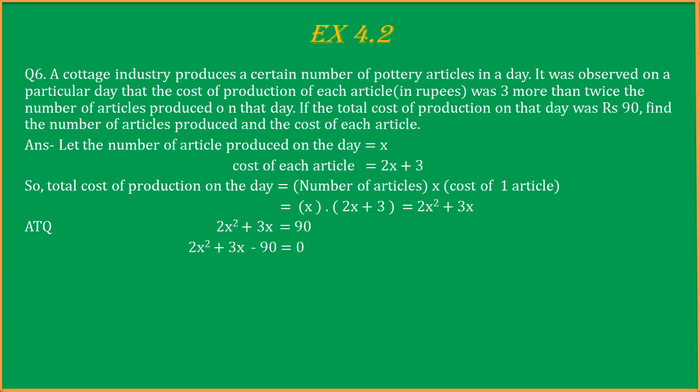Taking 90 to the left side, we will get a quadratic equation. Now we will solve by factorization using splitting the middle term. So we will split 3x into 15x and minus 12x. In the first two terms we will take x common, and in the next two terms we will take 6 common. So we will get (2x + 15)(x - 6) equals to 0.